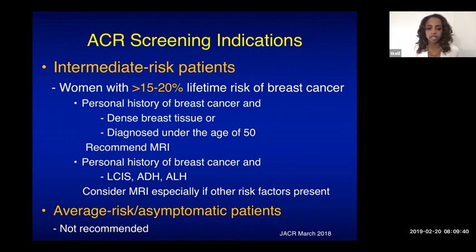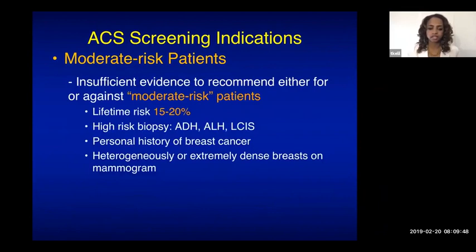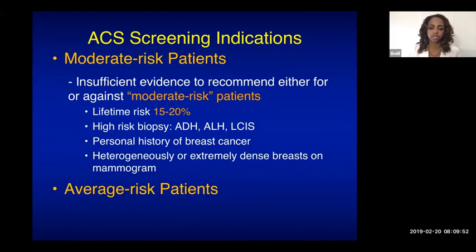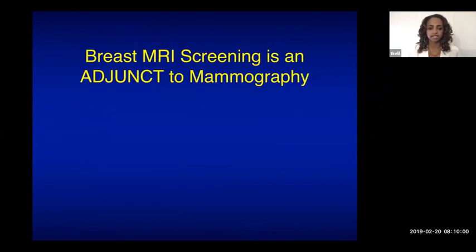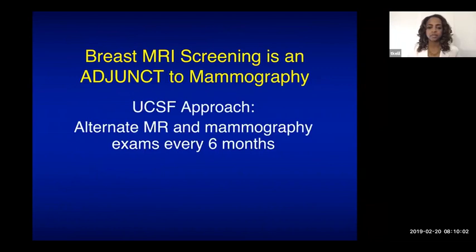ACR does not recommend screening MRI for average-risk or asymptomatic patients, and neither does the American Cancer Society, which also lacks sufficient evidence for moderate-risk patients. Importantly, breast MRI screening is an adjunct to mammography — it does not replace it. At UCSF, we alternate MRI and mammography every six months.